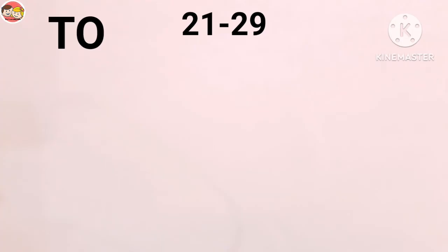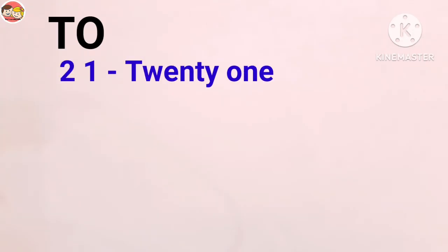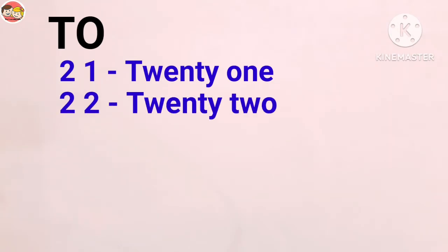Next, numbers 21 to 29. There is a certain pattern: T-W-E-N-T-Y (20) plus O-N-E (1) equals 21. Twenty plus T-W-O (2) equals 22. And so on up to 29.